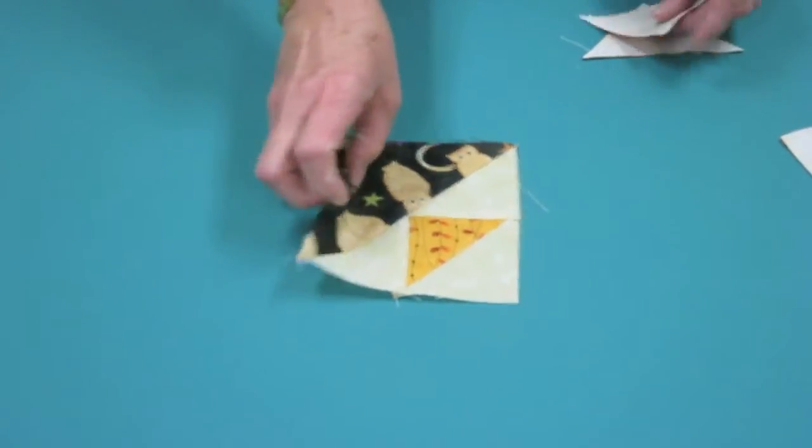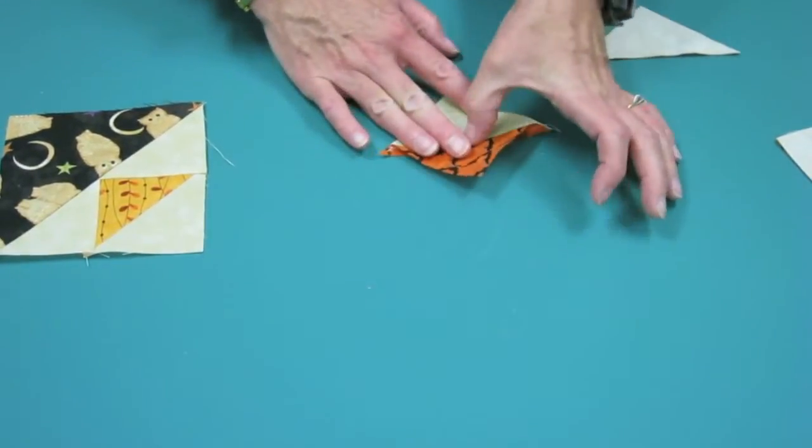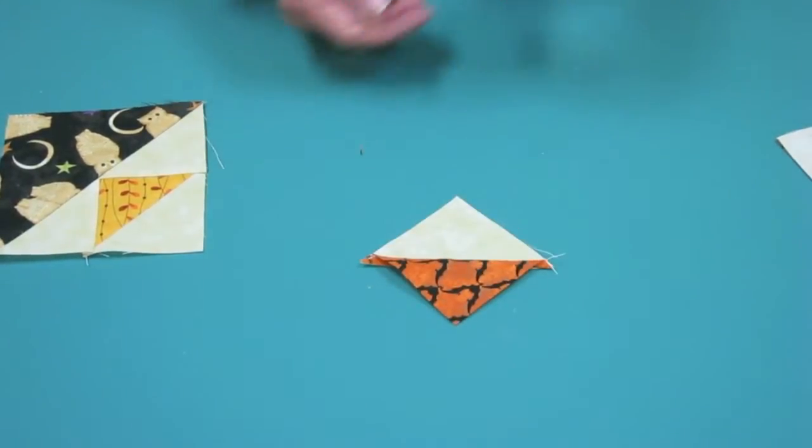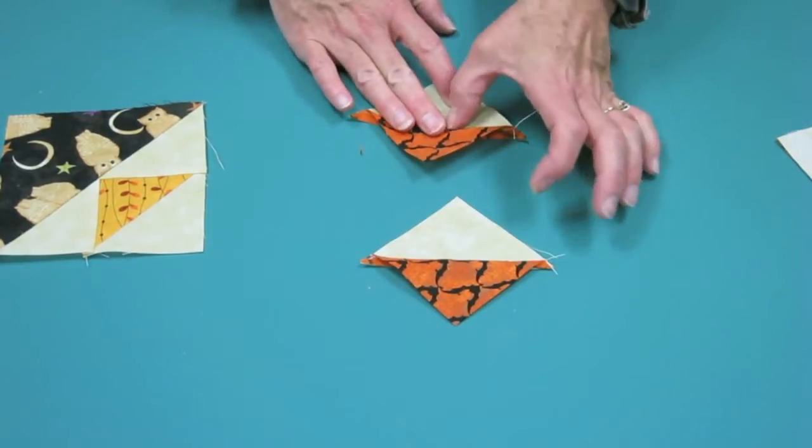Then I have my triangle squares here of my medium, and when I'm at home, I use an iron, and not my thumbnails. But here we're using thumbnails.